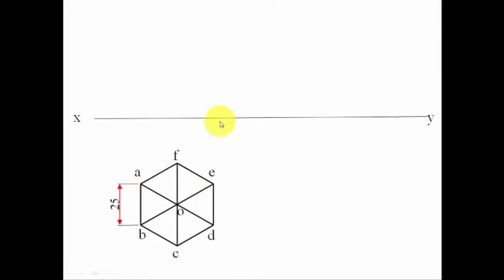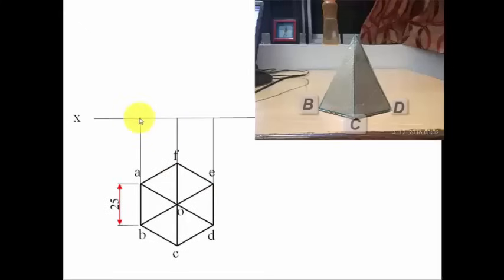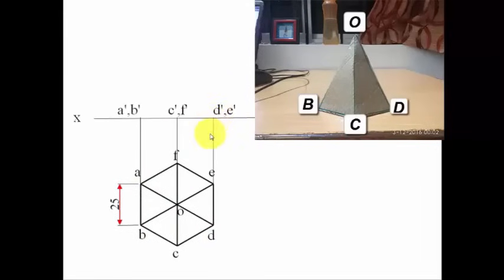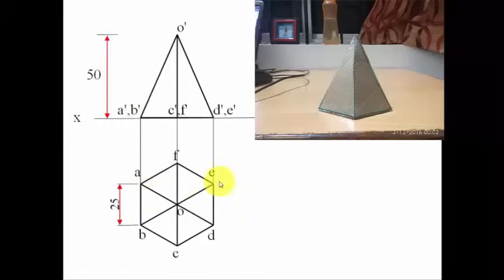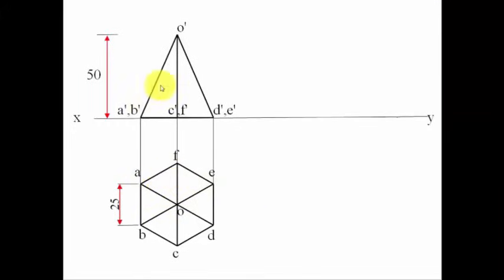Now that the top view is done, draw projector lines from A through F and E until they intersect the XY line. These intersection points are labeled A-dash, B-dash, C-dash, D-dash, E-dash, F-dash. In the front view you see the height of the hexagonal pyramid — 50 millimeters — and from the base point you go up 50 millimeters to locate the apex. Join D-dash to O-dash, C-dash to O-dash, and B-dash to O-dash as solid lines; slant edges A-O, F-O, and E-O are overlapped and not visible.